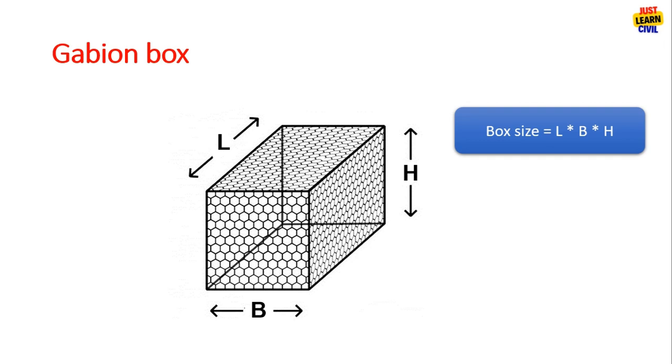This is a gabion box which has length, breadth and height. You can mention any specific dimensions and it is covered in GI wire mesh on all the faces.